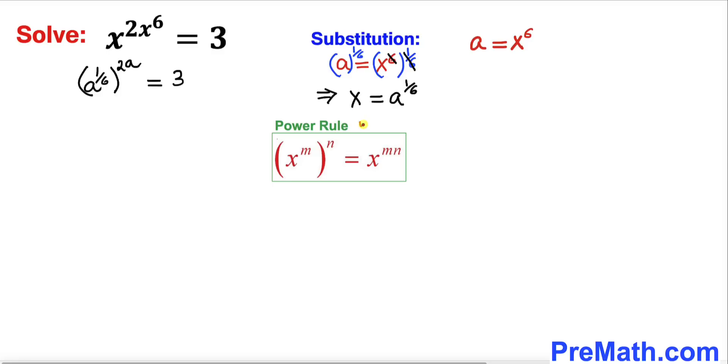And now let's focus on this power rule. According to this rule we can multiply out these two nested exponents. So therefore the left hand side could be written as a power 1 over 6 times 2 times a equals to 3.